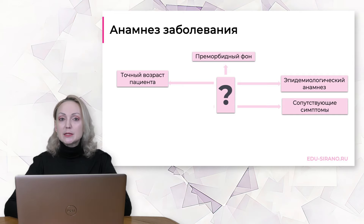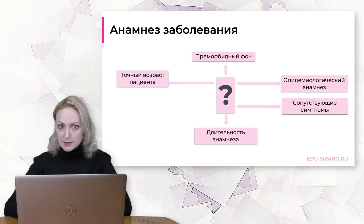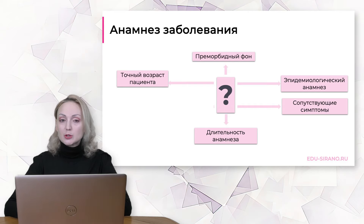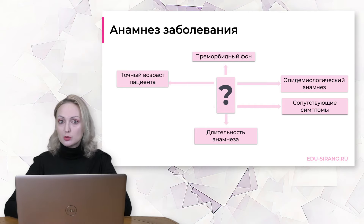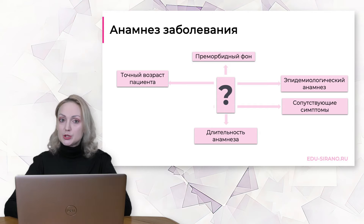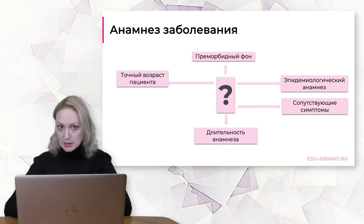Обязательно необходимо уточнить длительность анамнеза. Особенно это важно при общении с подростками, поскольку подростки считают себя уже взрослыми и часто сообщают родителям о своих проблемах спустя какое-то время. Но на приёме у врача они, как правило, более честны и могут сказать, что заметили увеличенный лимфатический узел ещё два месяца назад, например, на тренировке в бассейне.